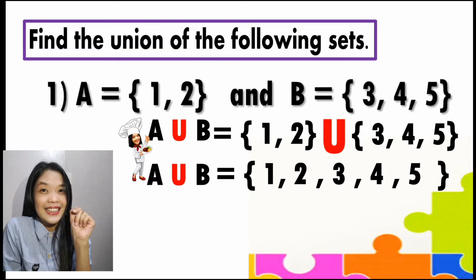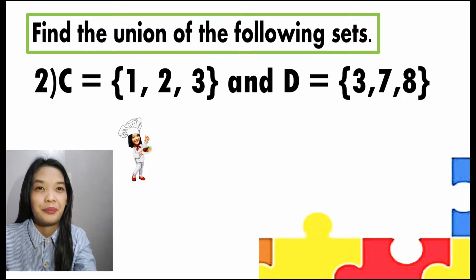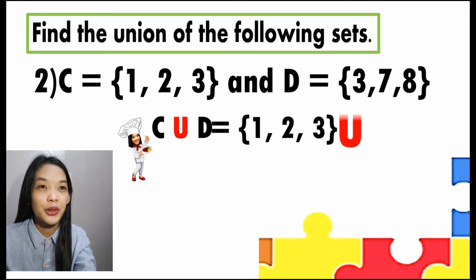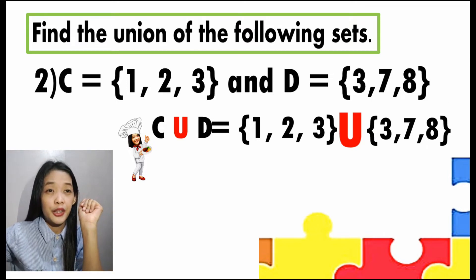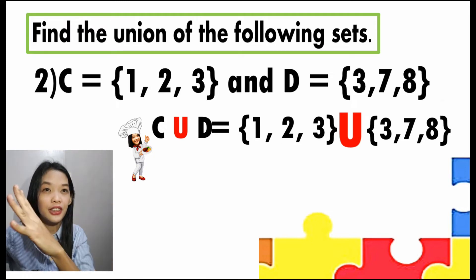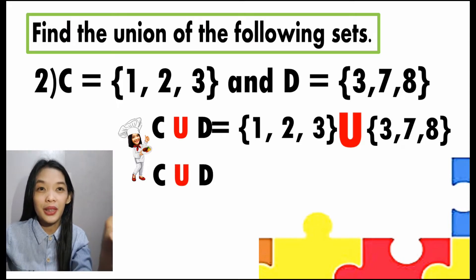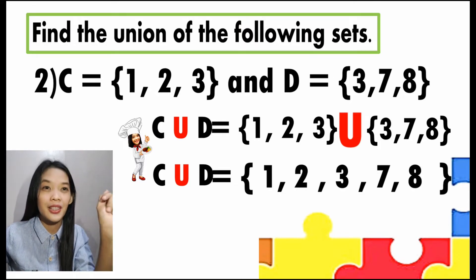That's all. It's easy, right? Let us have number two — C union D. Set C has the elements 1, 2, and 3. Then the symbol for the union. And set D has the elements 3, 7, and 8. Observe carefully — are there common numbers from C and D? Yes, there is. And what is that? That's number 3. From the definition, if there are similar elements, we'll just write it once. And therefore, our answer will be C union D equals 1, 2, 3, 7, and 8.